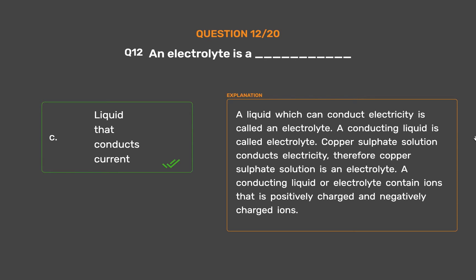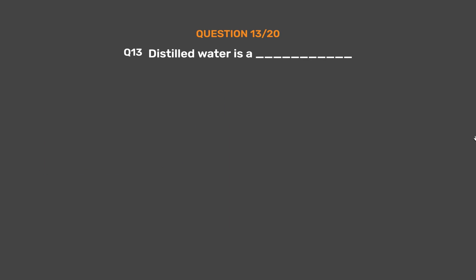Copper sulfate solution conducts electricity, therefore copper sulfate solution is an electrolyte. A conducting liquid or electrolyte contains ions that are positively charged and negatively charged ions.